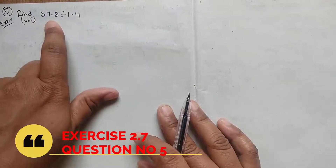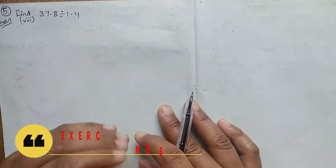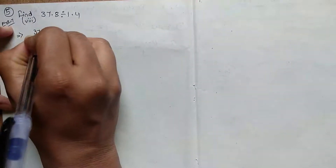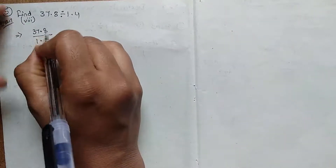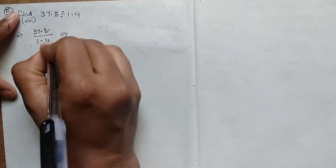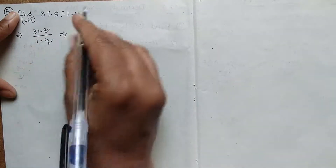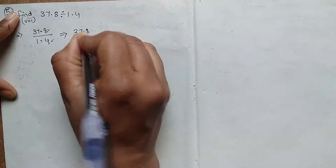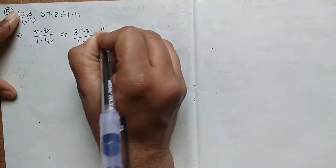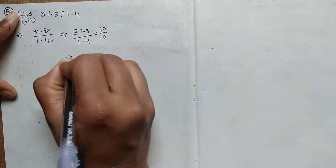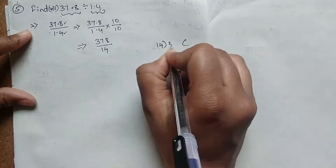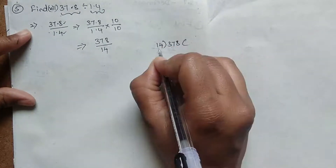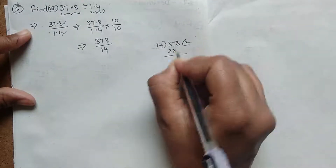Next, here is another case — a problem where both the numerator and denominator have decimal numbers. So we have to apply division here: 37.8 divided by 1.4. Now we have decimals in both numerator and denominator, both in the tenths place. So it is easy to multiply both denominator and numerator by 10. Now we get 378 by 14, and we apply normal division: 14 twos are 28.